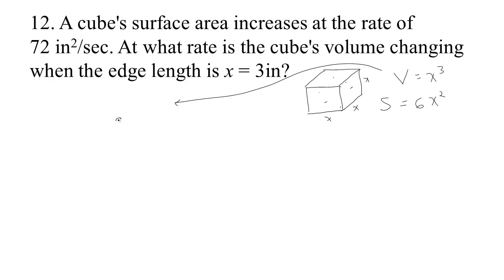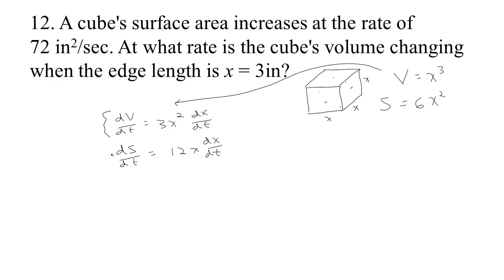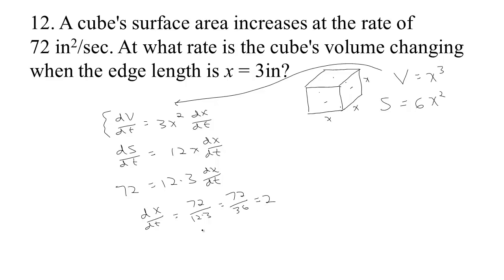Differentiating V = x³ with respect to t gives dV/dt = 3x² · dx/dt. Differentiating S = 6x² gives dS/dt = 12x · dx/dt. We're looking for dV/dt; we know x = 3 but not dx/dt. However, we know dS/dt = 72, and from dS/dt = 12x · dx/dt we can solve: dx/dt = 72 / (12 × 3) = 72 / 36 = 2 inches per second.